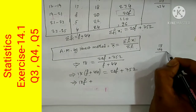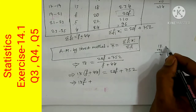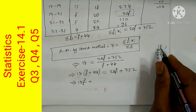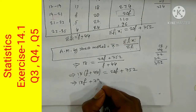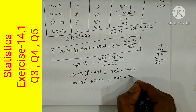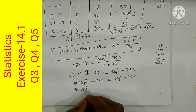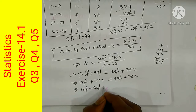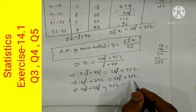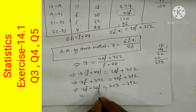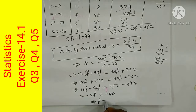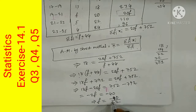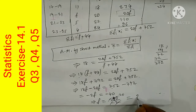18 into 44 equals 792. So we have 18F + 792 = 20F + 752. Rearranging, 18F − 20F = 752 − 792, giving −2F = −40. Therefore F = −40 / −2 = 20. The minus signs cancel, and the missing frequency F is equal to 20.